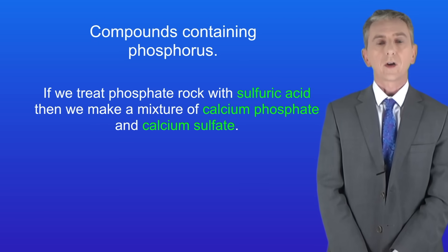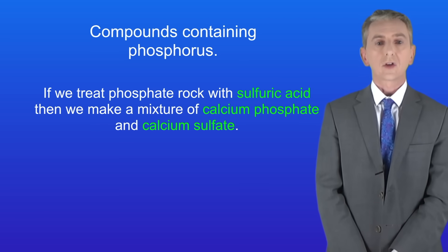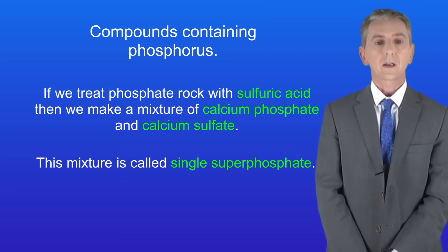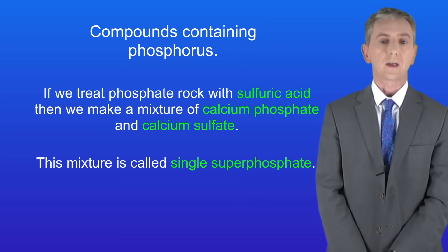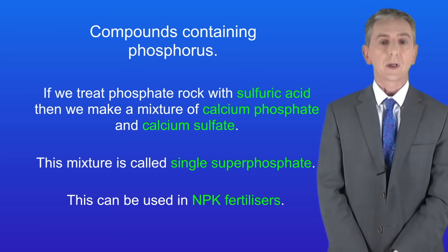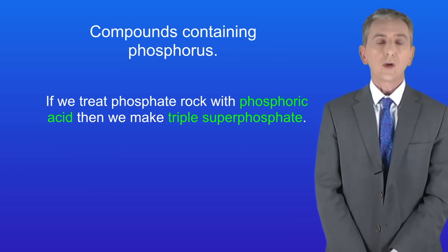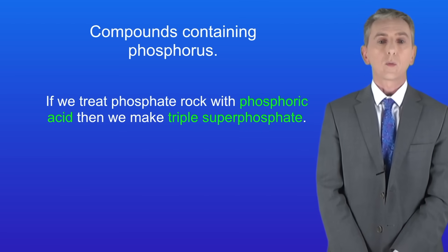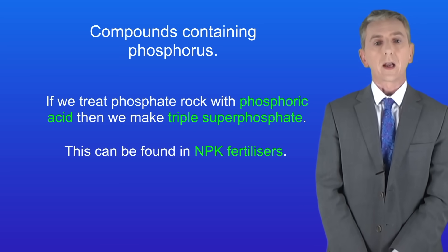If we treat phosphate rock with sulfuric acid then we make a mixture of calcium phosphate and calcium sulfate. This mixture is called single superphosphate and can be used in NPK fertilizers. Finally, if we treat phosphate rock with phosphoric acid then we make triple superphosphate, which can also be found in NPK fertilizers.